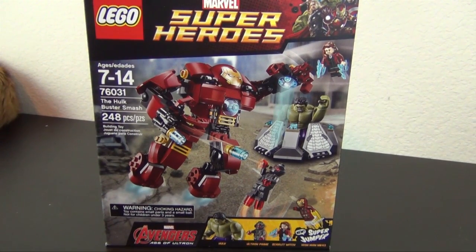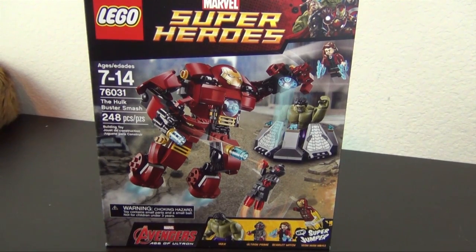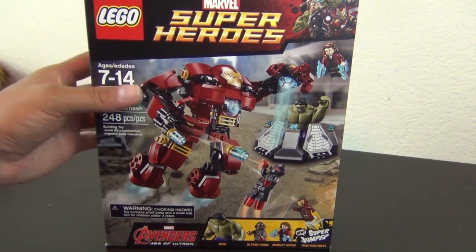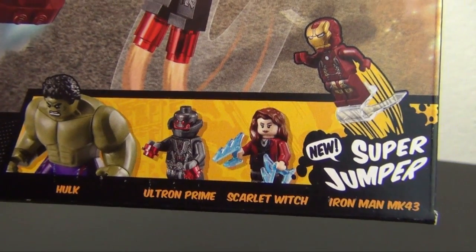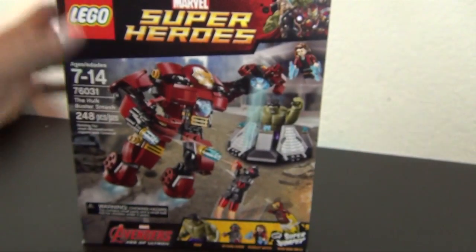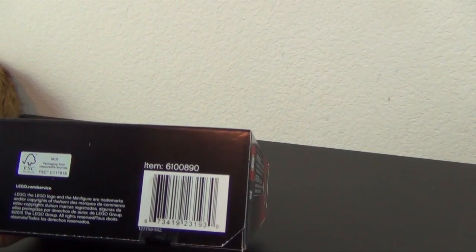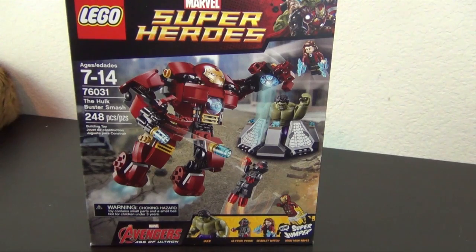Hey everyone, welcome back to the Hidden Break where today we're building the Marvel Superheroes Hulk Buster Smash. This is set number 76031 with 248 pieces. We have four minifigures: Hulk, Ultron Prime, Scarlet Witch, and Iron Man Mark 43 with the Superjumper. It's not so much new anymore, this set is kind of oldish.